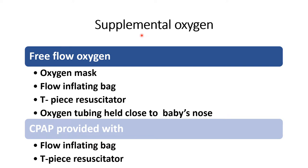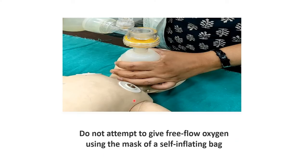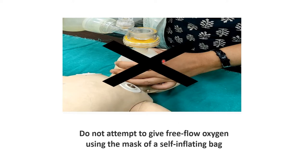Ways to provide supplemental oxygen: free flow oxygen by oxygen mask, flow inflating bag, T-piece resuscitator, or oxygen tubing held close to the baby's nose. CPAP can be provided with the flow inflating bag, T-piece resuscitator, or CPAP machine. Do not give free flow oxygen with the Ambu bag or self-inflating bag — oxygen is only delivered when you squeeze the bag, so it will not provide free flow oxygen. This is the wrong way.